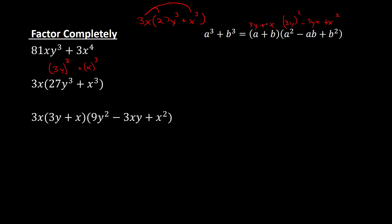This becomes 3x times 3y plus x. Then 3y squared gives us 9y squared, and then minus 3y times x gives us 3xy — we put the x first, so 3xy — and then x squared. The key is to make sure you factor out the greatest common factor first, and then notice what you have is the sum of cubes. Using the pattern you can factor that quickly, and we are done.